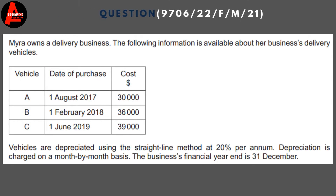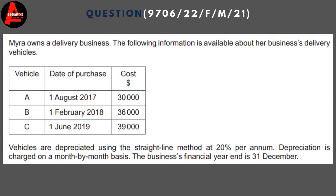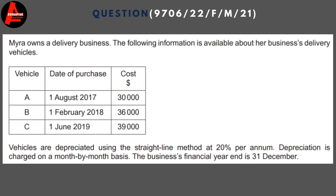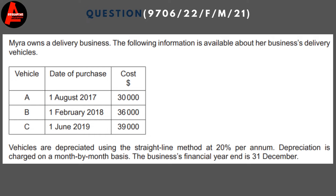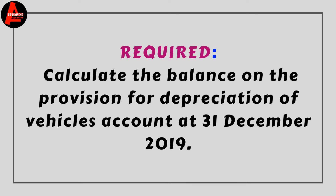The question: Maida Once Delivered Business provides the following information for its delivery vehicles. There are three vehicles — A, B, and C — with their dates of purchase and cost prices given. Vehicles are depreciated using the straight-line method at 20% per annum. The business's financial year ends on 31st December 2019.